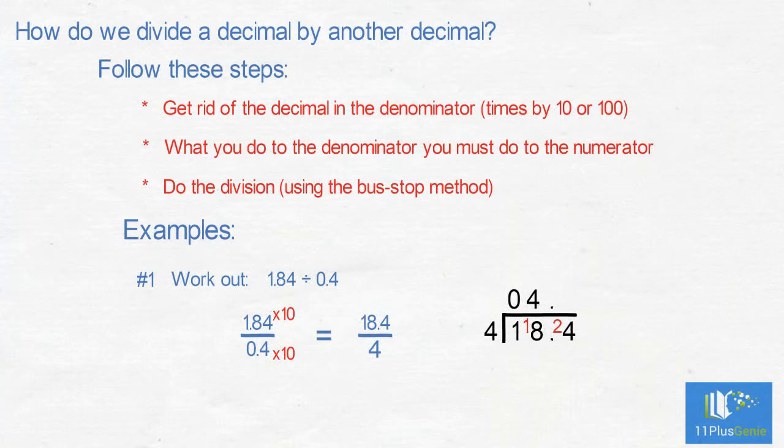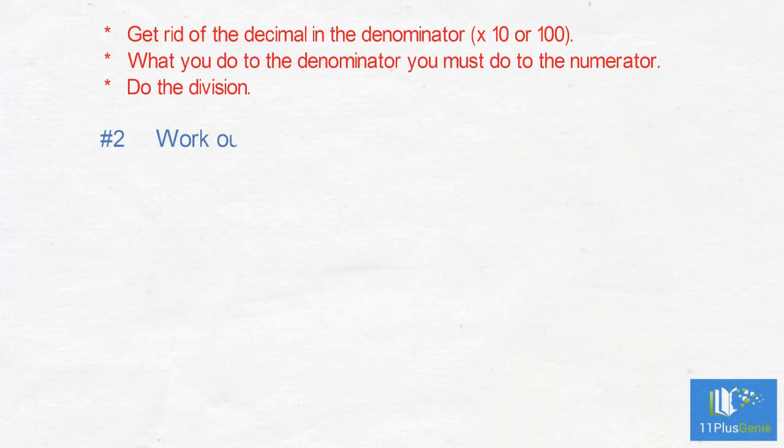Number 2: Work out 0.625 divided by 0.05.